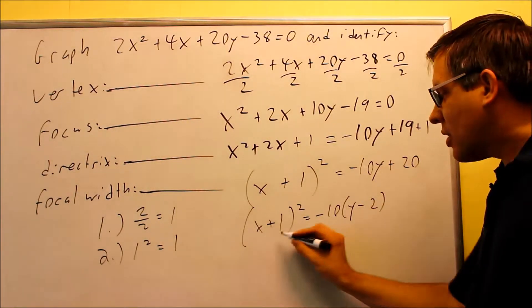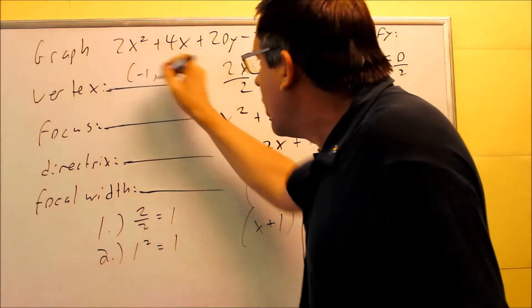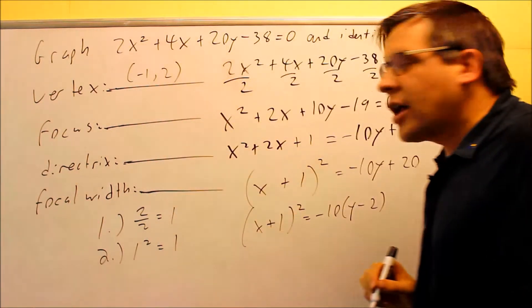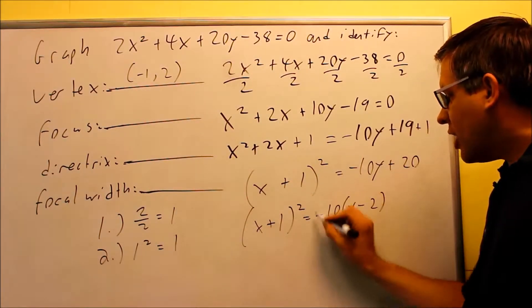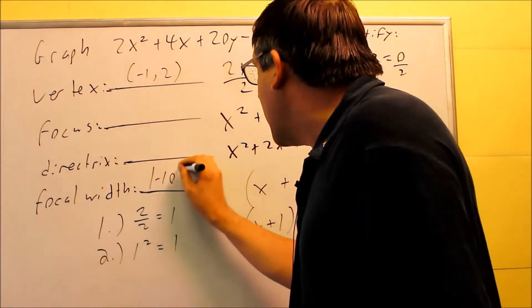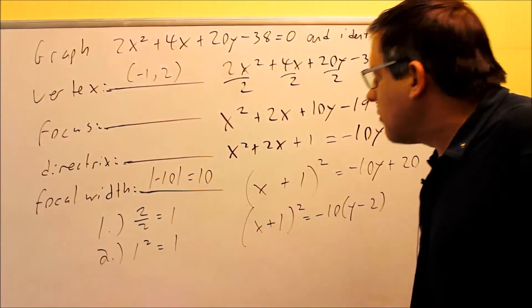The vertex, opposite sign of each of these. Opposite sign of that is negative 1. Opposite sign of this is positive 2, so we get negative 1, 2 for the vertex. For the focal width, we're going to take the absolute value of this number here in front of the parenthesis. Absolute value of negative 10 is going to give us positive 10. So now we have that complete.